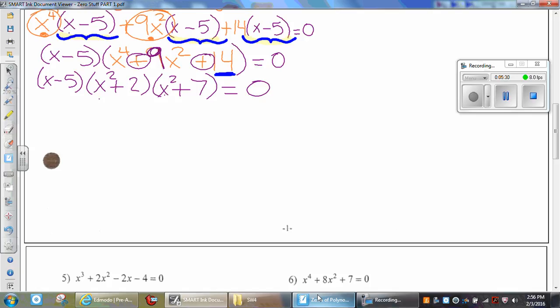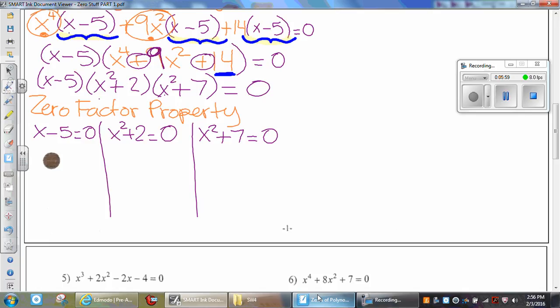Now that we have all the factors equaling 0, we could use the zero factor property. That would state that you could take each factor equal to 0 and solve for x. The very first one, all we do is take this negative 5 to the other side, so x equals positive 5. What type of zero is that? Is it a real number? Yes. Is it rational or irrational? Rational because we could turn it into a fraction.